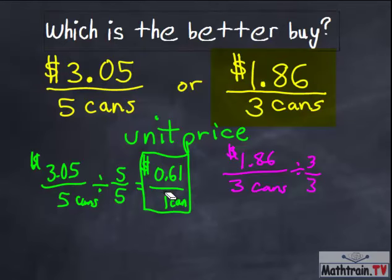These are just equivalent fractions, so I'm not changing anything. And I'll get one can down here, three divided by three, and then 186 divided by three, which is 62. So this one costs 62 cents per can.